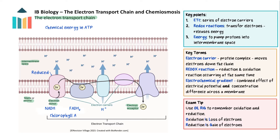To allow more electrons to enter the electron transport chain, electrons must leave it. If electrons do not leave the chain, there is a gridlock — a bit like cars entering a street but none leaving, resulting in a traffic jam. Electrons must be passed to a final electron acceptor that carries them away from the end of the chain. This final electron acceptor receives the electrons, is reduced, and simultaneously binds to protons, allowing electrons to continue flowing along the chain and enabling proton pumping for chemiosmosis.